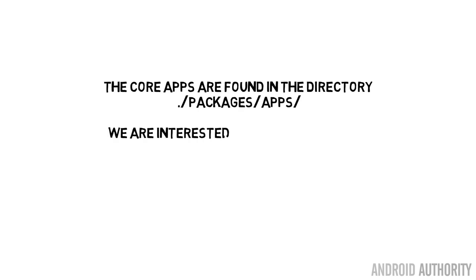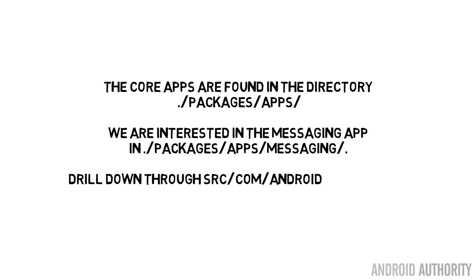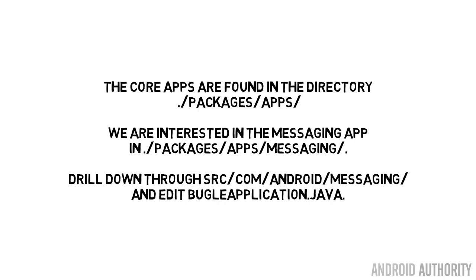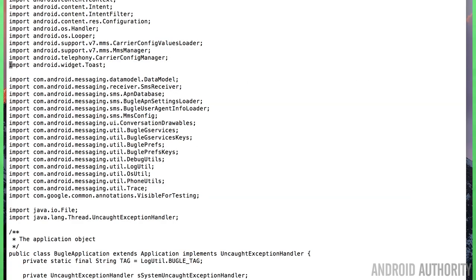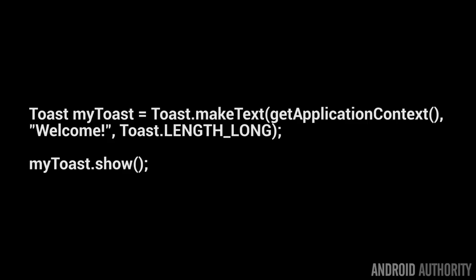So let's go ahead and modify the messaging app. What you need to do is change directory into packages/apps. Then inside, find the messaging app, which is in packages/apps/messaging, then drill down through source/com/android/messaging and edit the file called BugleApplication.java. BugleApplication.java is basically the entry point into the messaging app. Scroll down and after the long list of import statements, you want to import the Toast widget — you do that using this line of code. Once you've added that in, go down to the onCreate function, which is called when the app is first started, and add in these two following lines of code towards the bottom of the function.